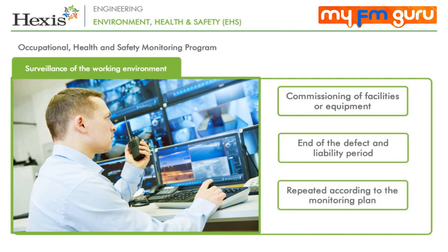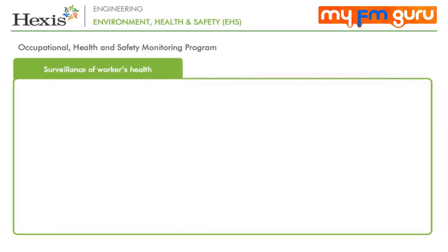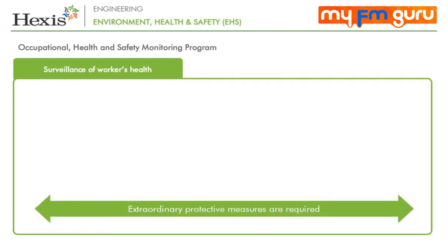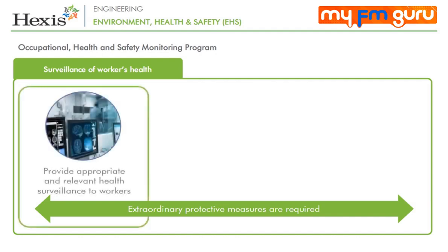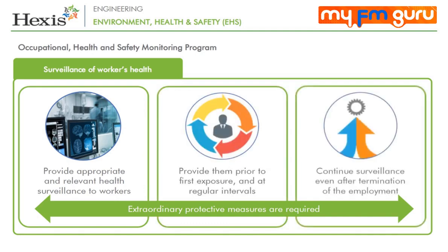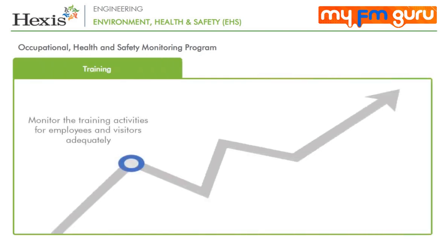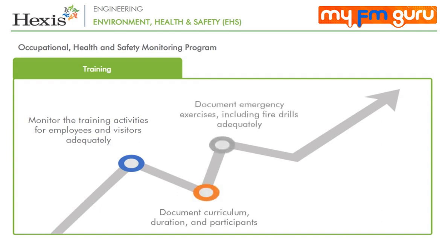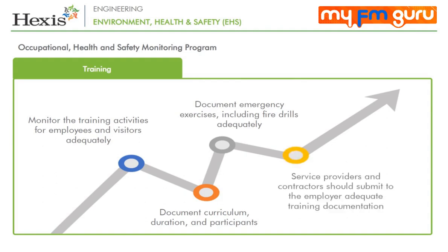Surveillance of workers' health is equally important. When extraordinary protective measures are required, for example against biological agents and hazardous compounds, workers should be provided appropriate health surveillance prior to first exposure and at regular intervals thereafter, and this surveillance should be deemed necessary even after termination of employment. Training activities for employees and visitors should be adequately monitored and documented, covering curriculum, duration and participants. Emergency exercises including fire drills should be documented adequately. Service providers and contractors should be contractually required to submit adequate training documentation before the start of their assignment.